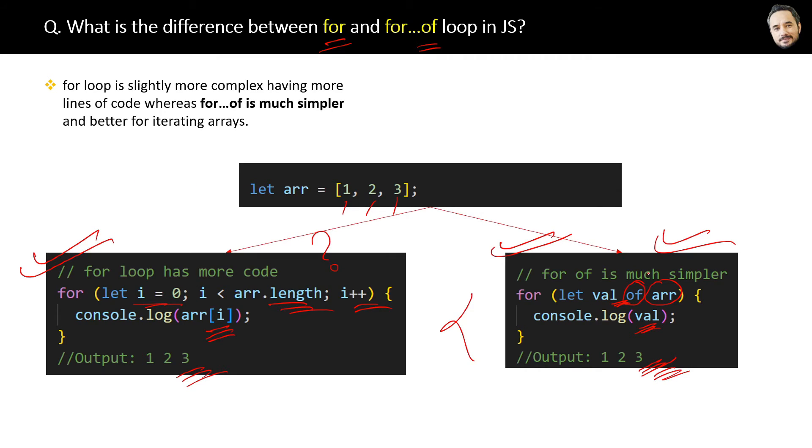For...of loop is limited - its use is limited to arrays and object iteration only. It cannot be used for anything else. It's more specific and for arrays and objects only. So that is the difference.